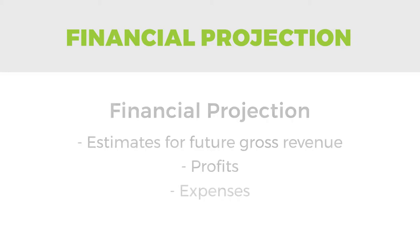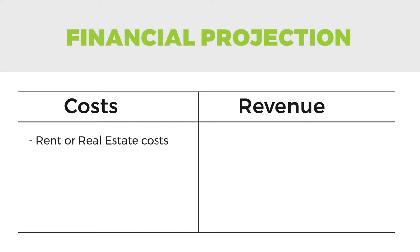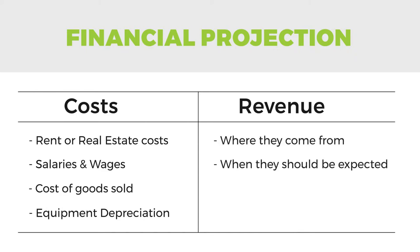A financial projection goes into detail about the company's expenses and sales. It may list costs like rent or real estate costs, salaries and wages, cost of goods sold, equipment depreciation, and more. It usually also includes estimates for sales, including where they come from, when they should be expected, and in what amounts.